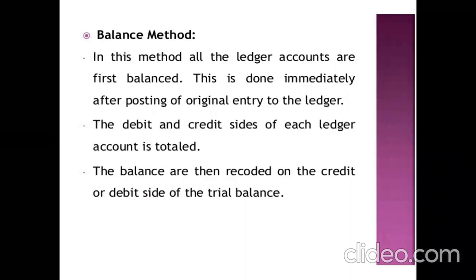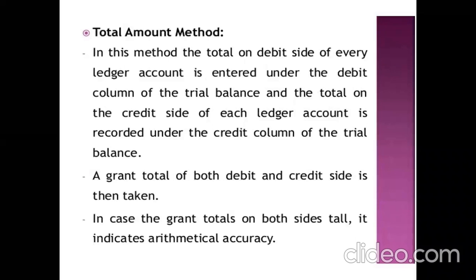In the balance method, all the ledger accounts are first balanced immediately after posting the original entry to the ledger. The debit and credit side of each ledger account is totaled, and the balances are then recorded on the debit or credit side of the trial balance — that is, the differences are taken into consideration. In the total amount method, the total of the debit side or credit side of every ledger account is taken, and the grand total of both debit and credit sides is computed. When the grand total on both sides tallies, that is called arithmetical accuracy.